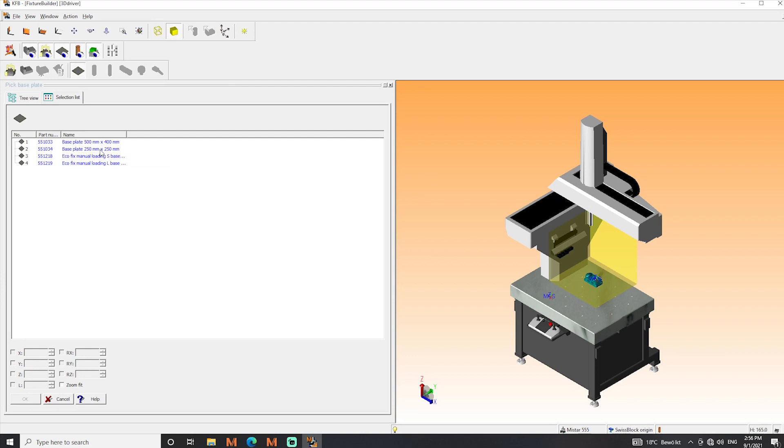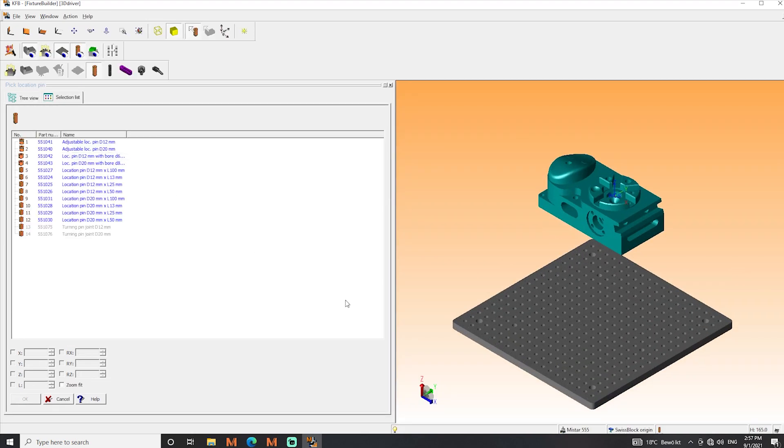Then we have to choose the base plate to build the fixture upon. In this case we use the 250 x 250 mm base plate by double clicking.